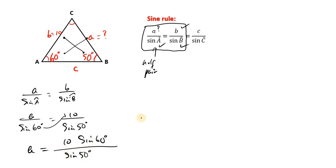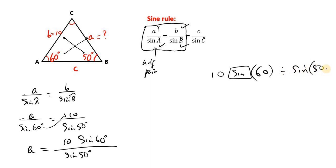In your calculator, press 1, then 0 for 10, then press the sine button, then enter 60 and close bracket. Then press divided by, then sine, then press 50 — you can have open and close bracket here. It'll return to you the correct answer. So let's put that in: 10, press the sine button, 60, then close the bracket — ensure you close the bracket — then divide by sine of 50. My calculator automatically adds the open bracket, but it's always good to close it.